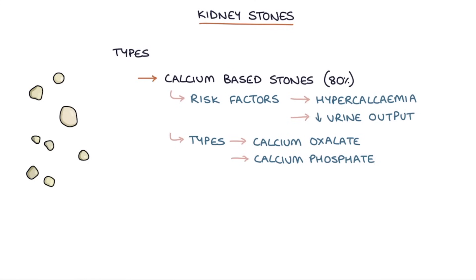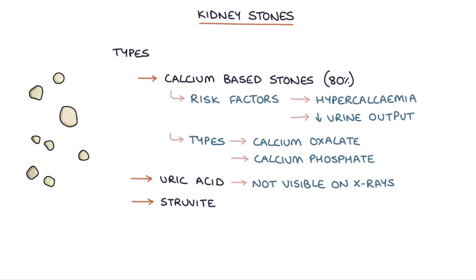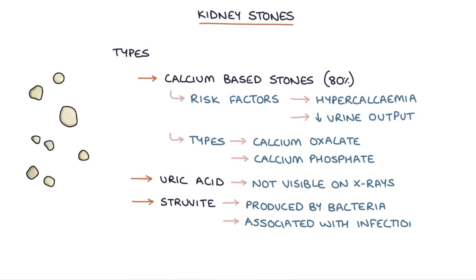The other types of kidney stones include uric acid stones, which are not visible on x-rays. Struvite stones — struvite is a chemical produced by bacteria — and these are associated with infection. And cystine stones, which are associated with cystinuria, an autosomal recessive disease.